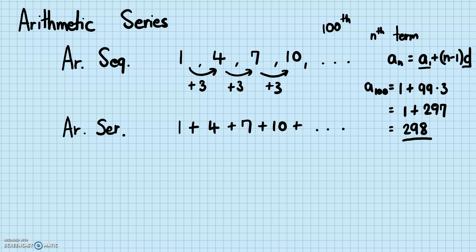Now the question emerges: can we do a similar thing with arithmetic series — where we have a formula to add up all the numbers to any number of terms? So if we wanted to add up all the terms until the 100th term, is there a formula to do that? It's not hard to derive the formula actually, so let's try and derive it.